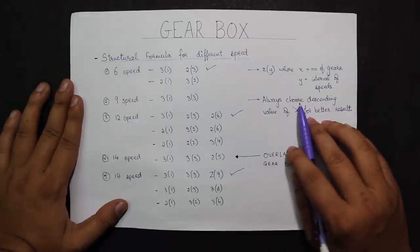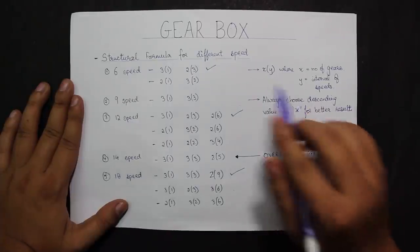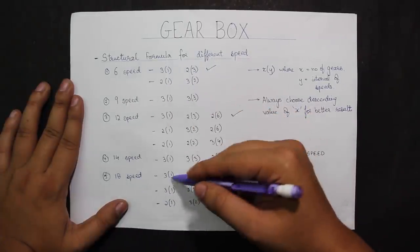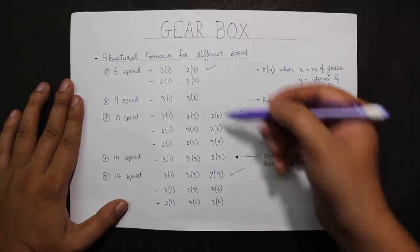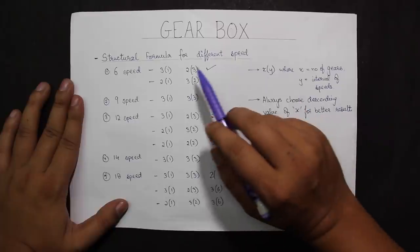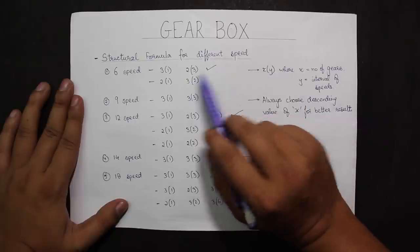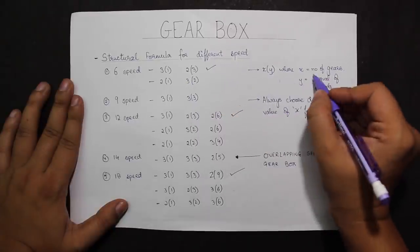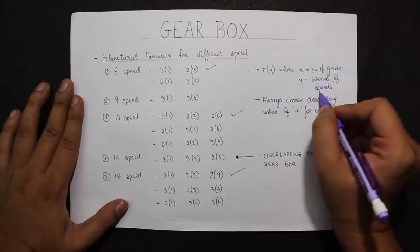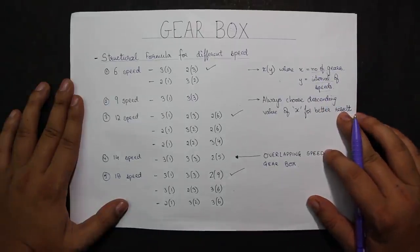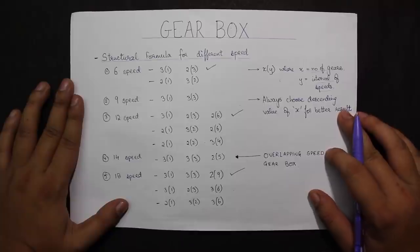The structural formula for designing each of these gearboxes is given here. We have a unit called X and a unit called Y, where X is the number of gears and Y is the interval of speeds. According to the arrangement, we can have a number of combinations to achieve the final stage.